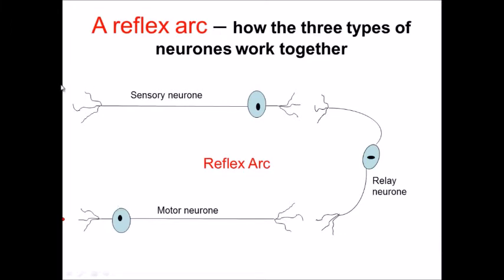If we think about the first thing that would happen, if you put your hand on, let's say, a hot plate, the first thing that would happen is that it would be picked up by a receptor. That receptor might be the temperature receptors in your hand.